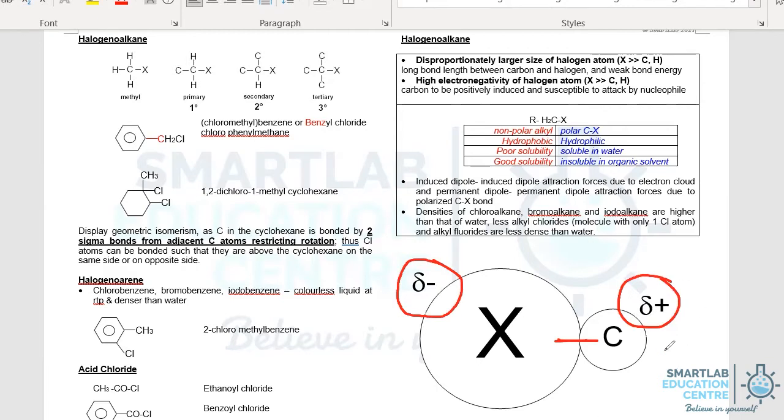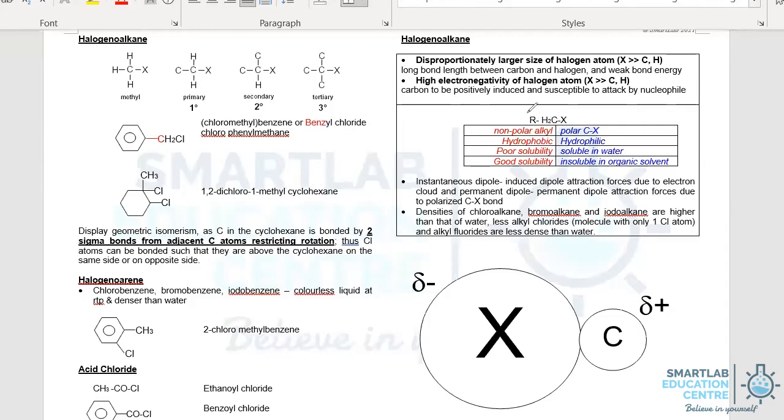When we look at examples of physical properties, we need to study both in terms of the number of electrons of the halogenyl alkane, as well as the permanent dipole of the C to X bond. Hence, there are two components to look at.